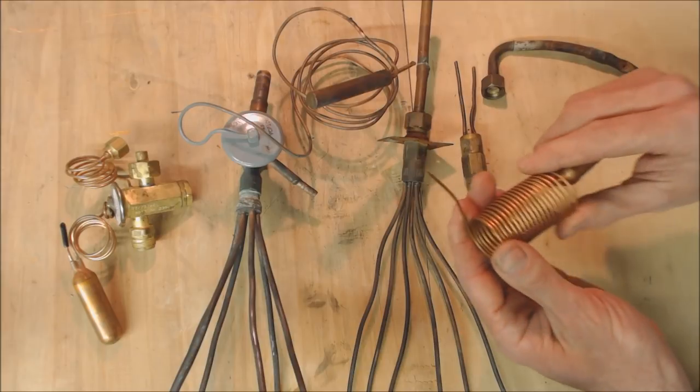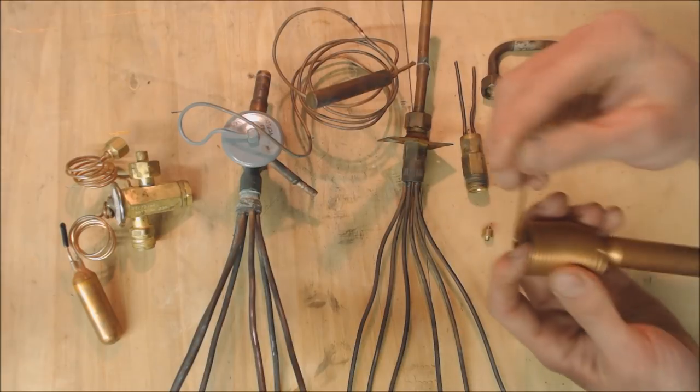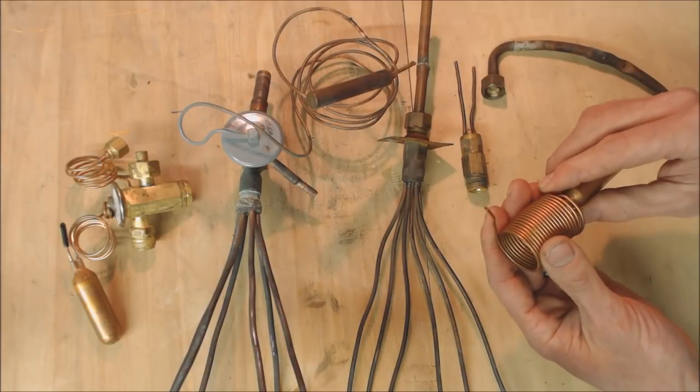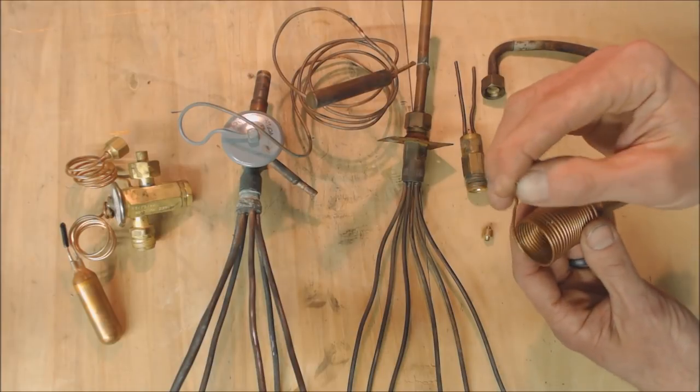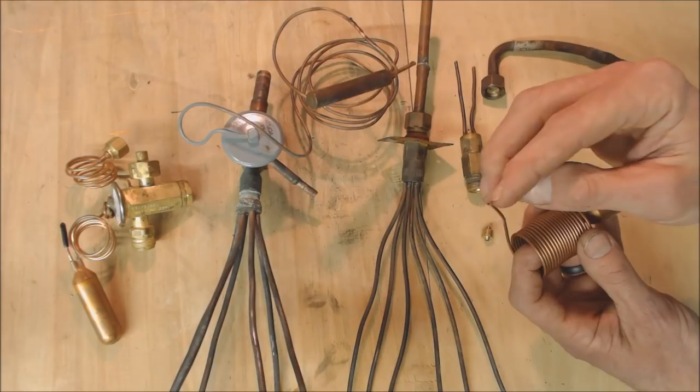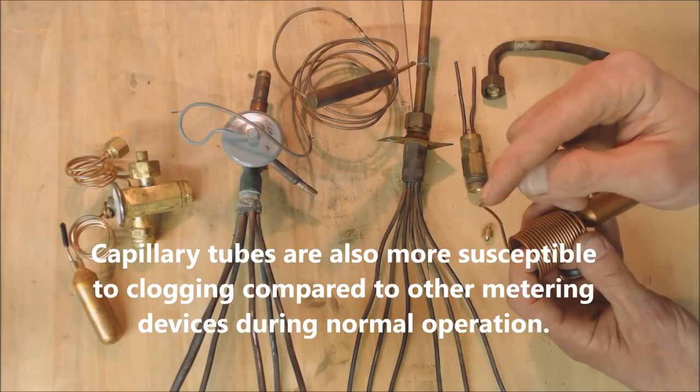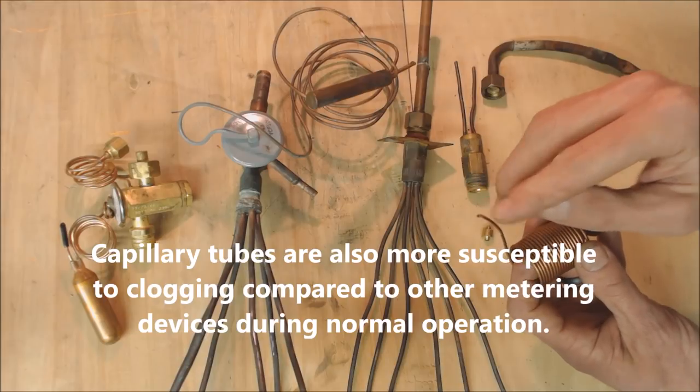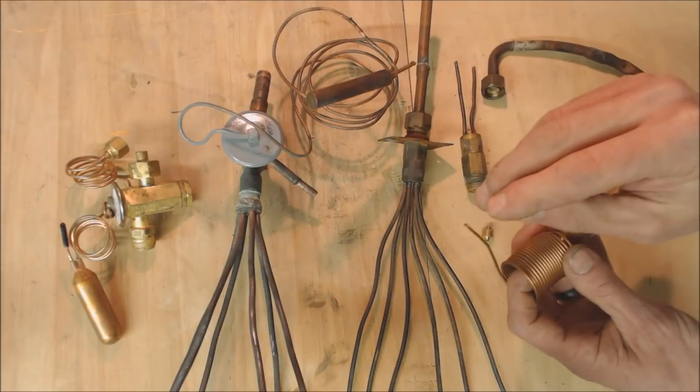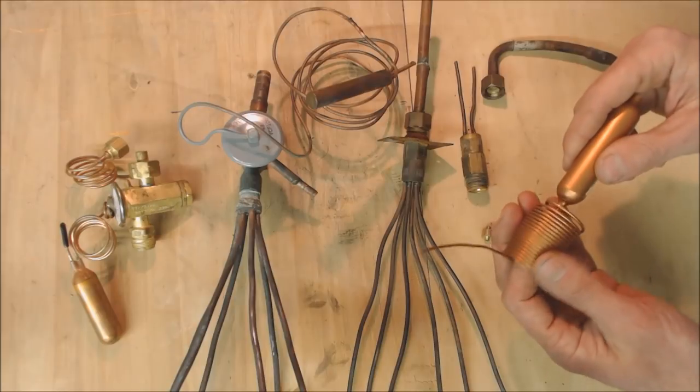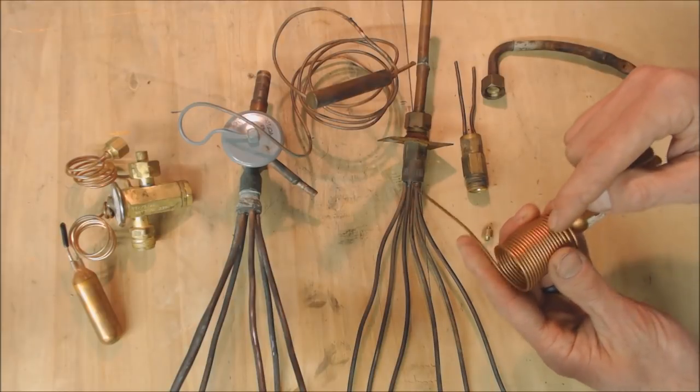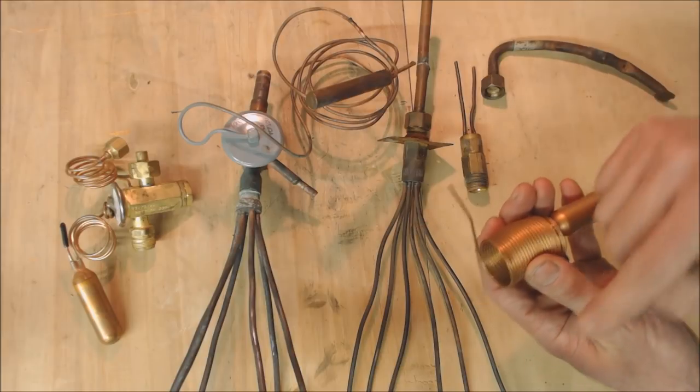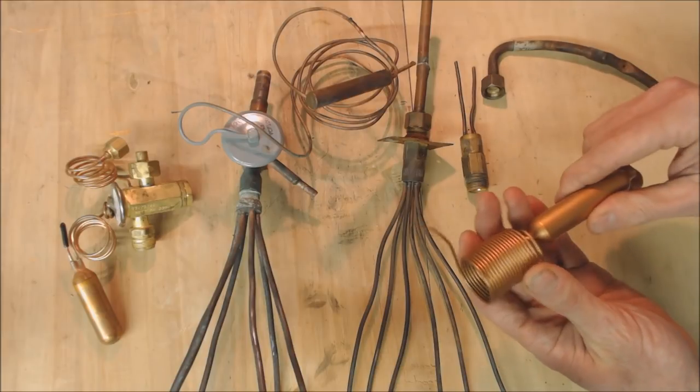With these, they're not easily changed if you want to change the size. You have to unbraze it and replace it. During the brazing process, it's easier to accidentally clog the cap tube with braze if you spend too long brazing or put too much on. This also does not have a bypass built in for a heat pump, so you'd have to have an external bypass around the capillary tubing.